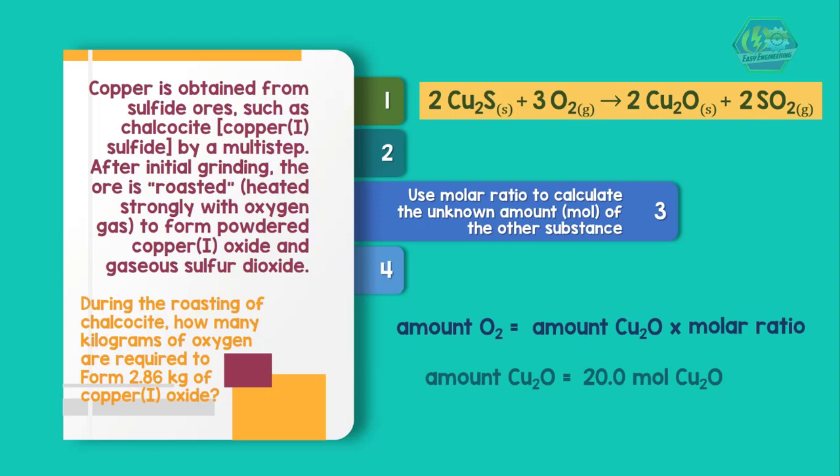Third step, use the molar ratio to calculate the unknown amount in moles of the other substance. The molar ratio is 3 moles O2 per 2 moles Cu2O. So we have 20 moles Cu2O times 3 moles O2 divided by 2 moles Cu2O equals 30 moles O2.